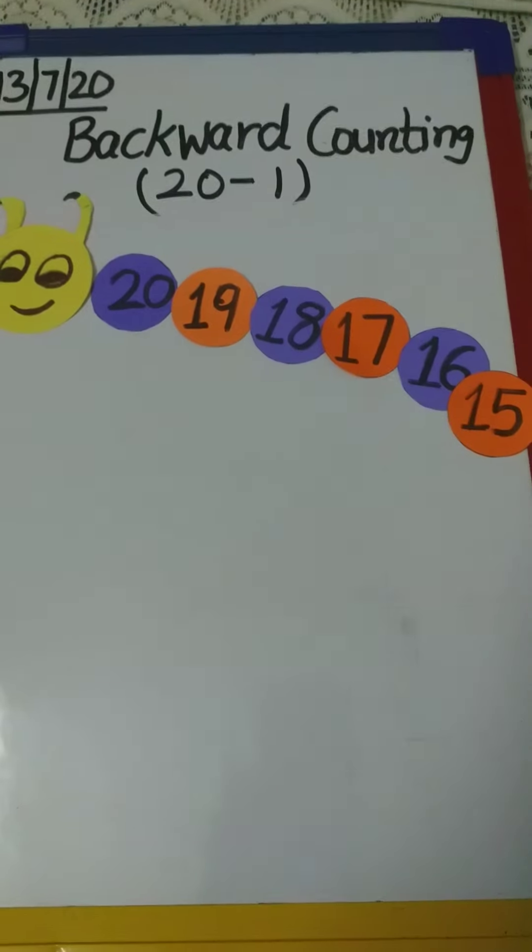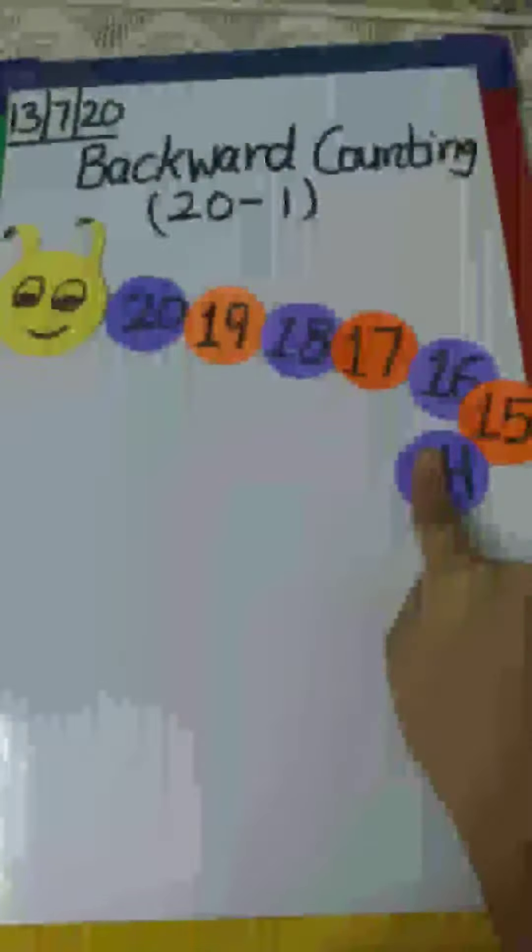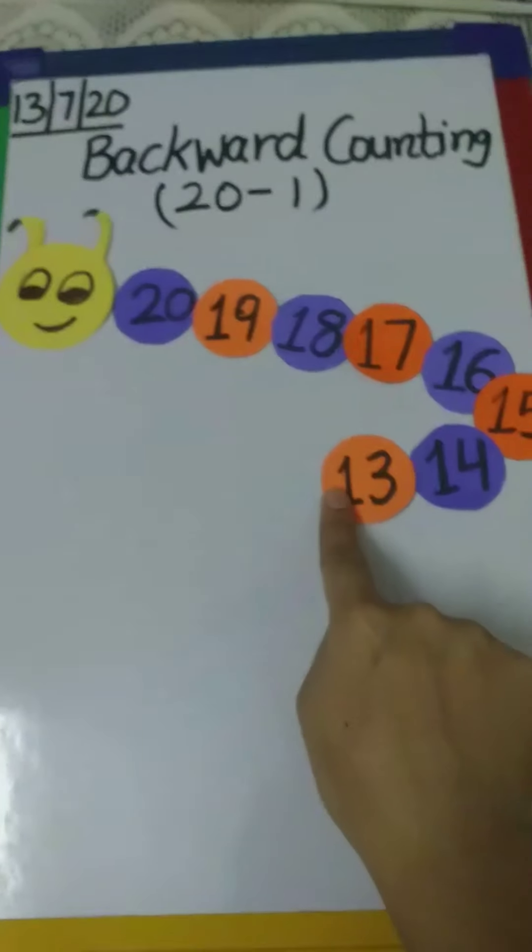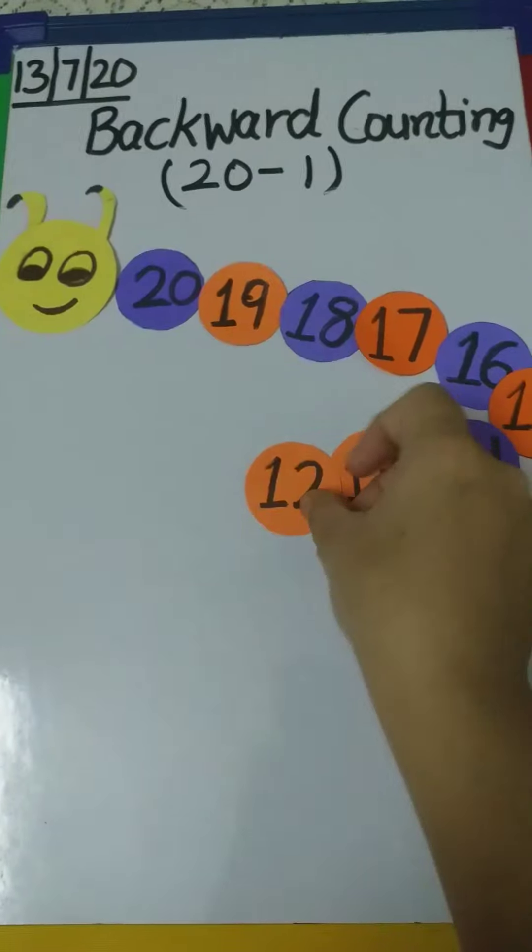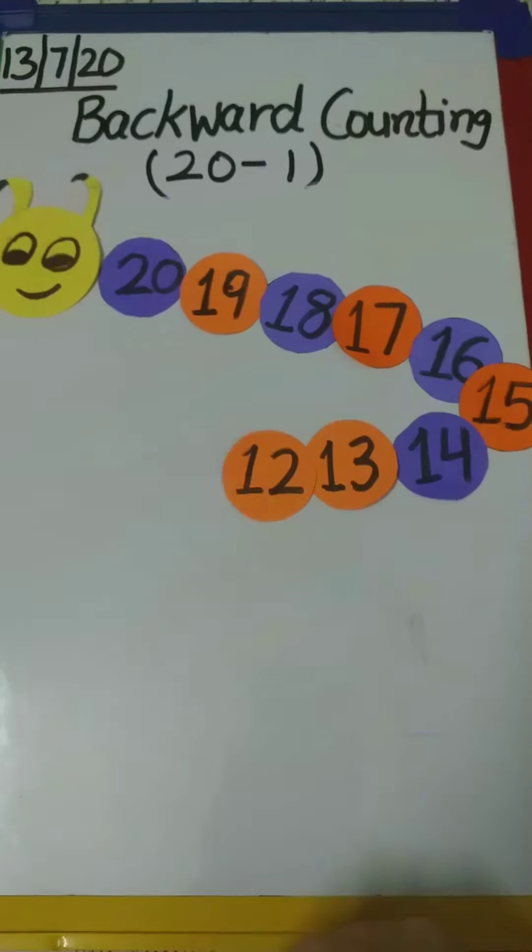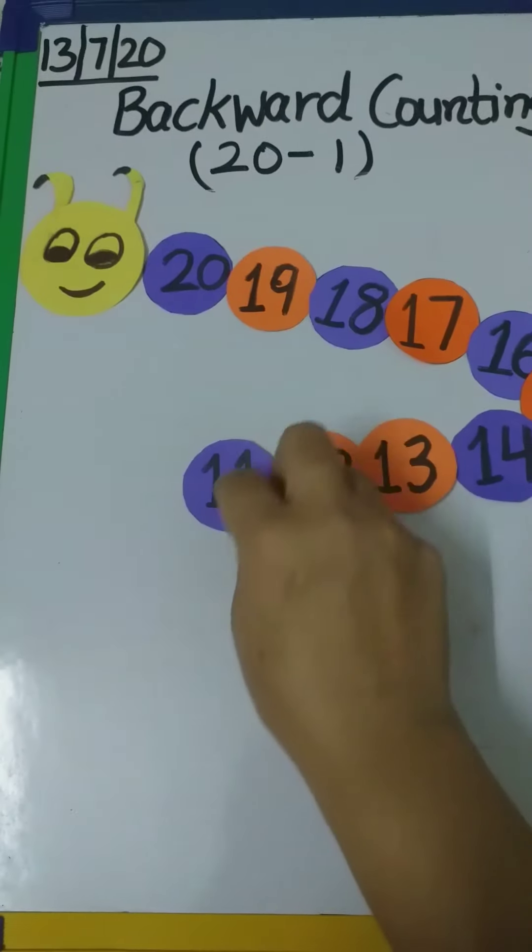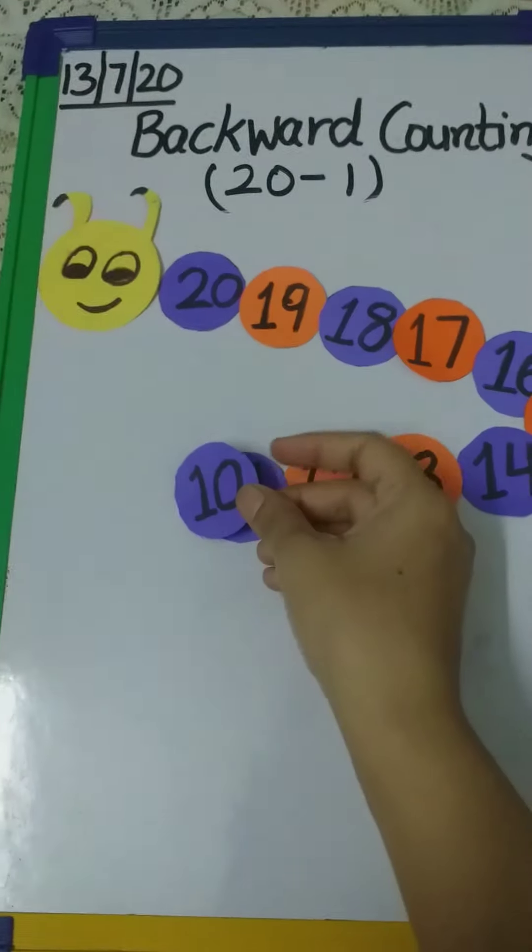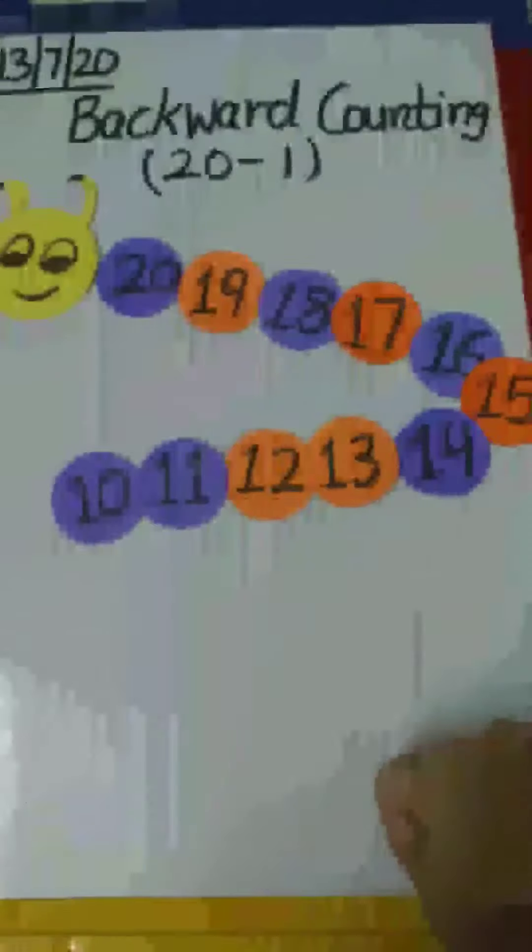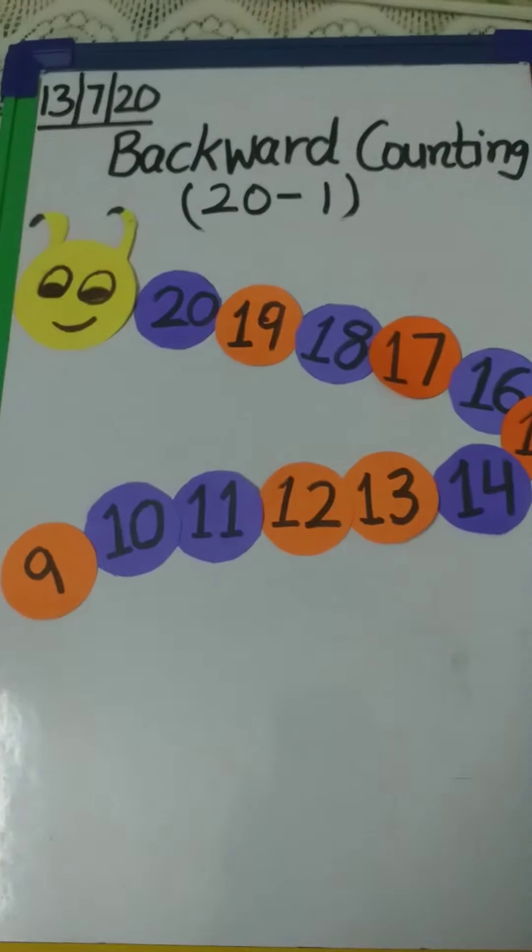And what comes before number 15 is 14. And what comes before number 14 is 13. And what comes before number 12? 11. Now tell me, what comes before number 11? Yes, it is 10. Then what comes before number 10? Number 9.